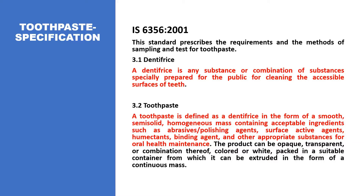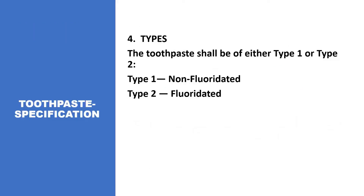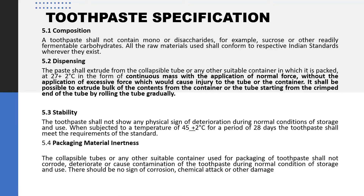Toothpaste is defined as tooth powder in the form of a smooth semi-solid preparation containing accessible ingredients such as abrasive agents, surface active agents, humectants, binding agents, and other appropriate substances for maintaining oral health. Toothpaste basically comprises two categories: Type 1, which is non-fluoridated, and Type 2, which is fluoridated. Regarding composition, it should not contain amino or disaccharides such as sucrose or other readily fermentable carbohydrates. All raw materials incorporated into toothpaste shall conform to the respective Indian Standards.